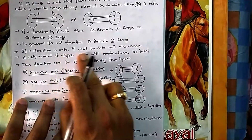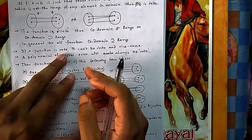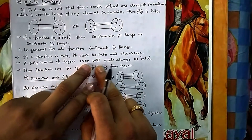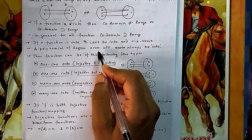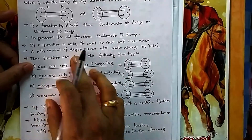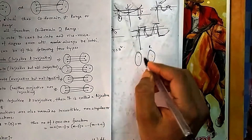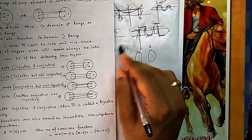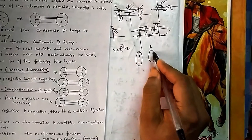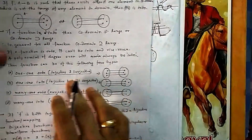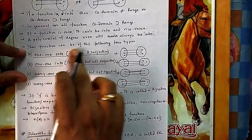If a function is onto, it cannot be into, and vice versa. A polynomial of even degree will always be into. For example, x² or x² + 2 — since even degree polynomials (mapping real to real) always produce positive outputs, some elements of R will be left alone in the co-domain, making them into functions.